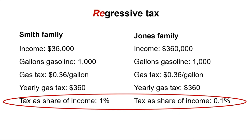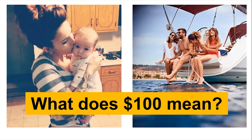Why is progressivity such an important principle? Consider what $100 means to a poor family compared to a rich family. For a single mom surviving on low wages, $100 may be the difference between covering rent or not going hungry that month. But for a rich family, $100 may just be the cost of a bottle of champagne. So $100 is genuinely worth more to the poor family than to the rich family. Progressivity is especially important today because we are living in a period of historic levels of wealth and income inequality.